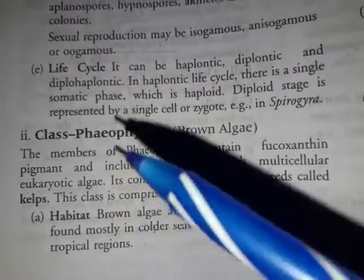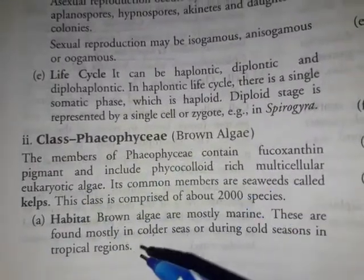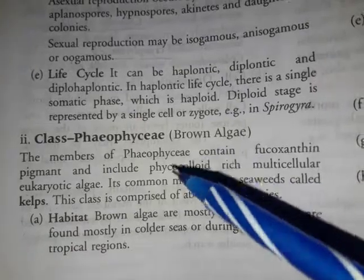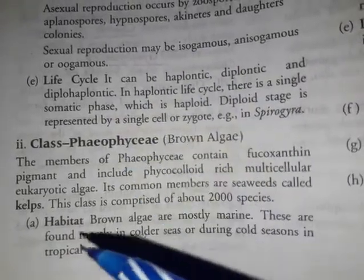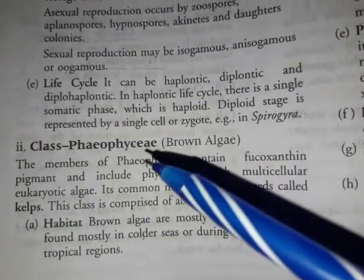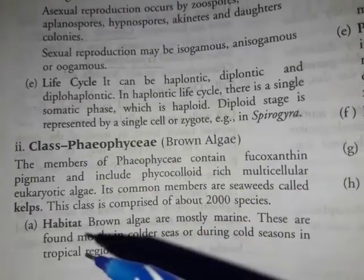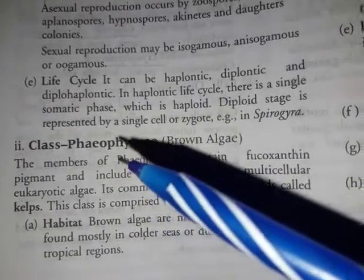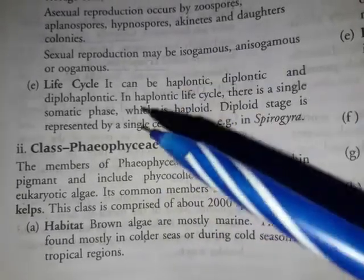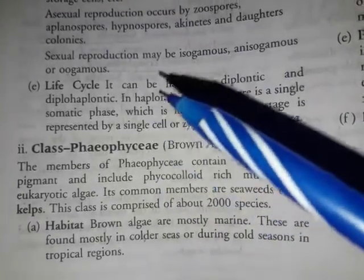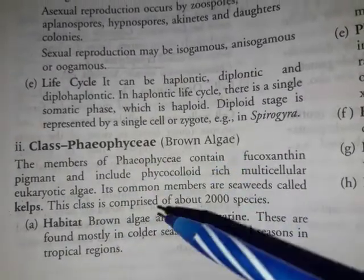Another class is Phaeophyceae, known as the brown algae. We have already studied that chlorophyll a and b are found in green algae. Now let's talk about Phaeophyceae — brown algae.